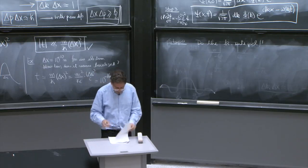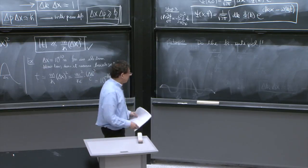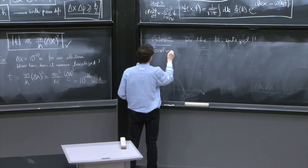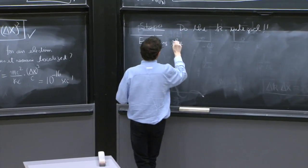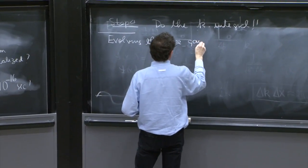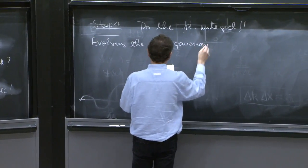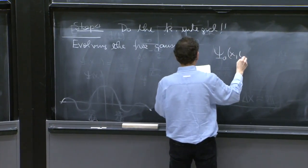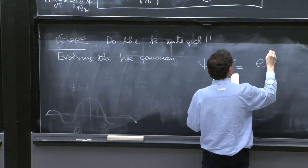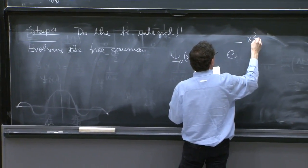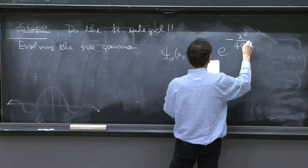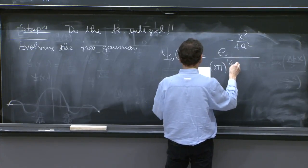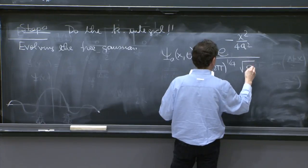So there will be an exercise in the homework, which is called evolving the free Gaussian. So you take ψ_a(x, t=0) to be e to the minus x² over 4a² over (2π)^(1/4) square root of a, that's for normalization.